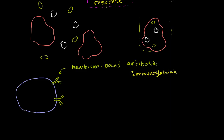Antibodies are sometimes referred to as immunoglobulins — these are essentially equivalent words. Antibodies are immunoglobulins; they're really just proteins. B cells have these on the surface of their membranes — these are membrane-bound. Usually when people talk about antibodies, they're talking about free antibodies that float around, and I'm going to go into more detail on how those are produced.